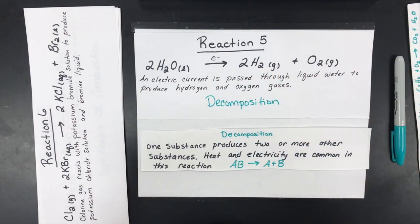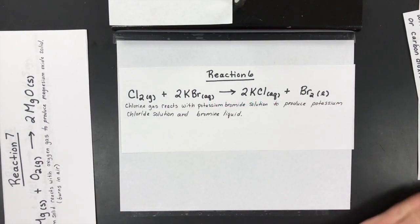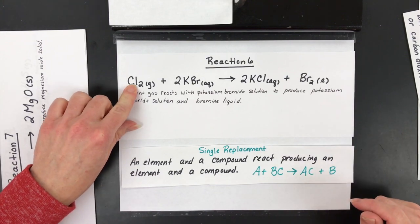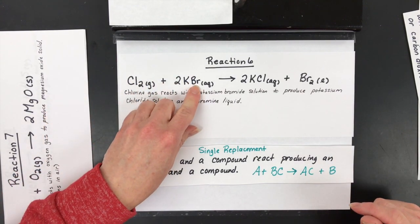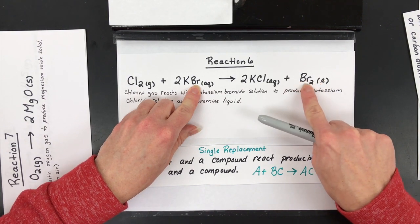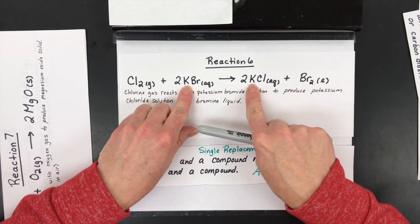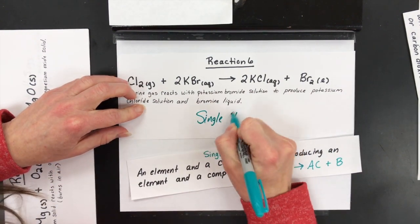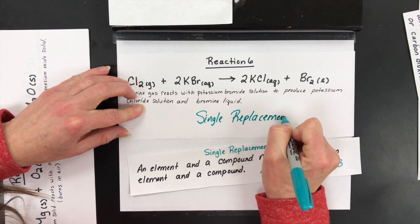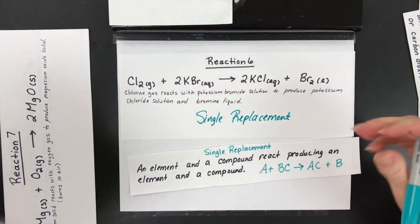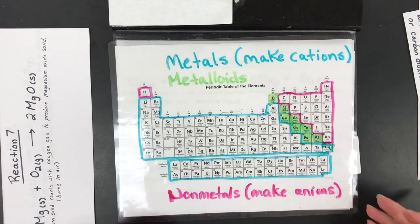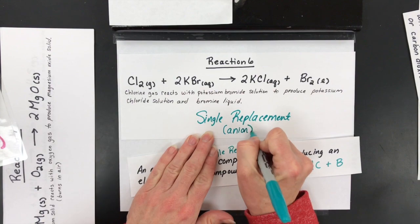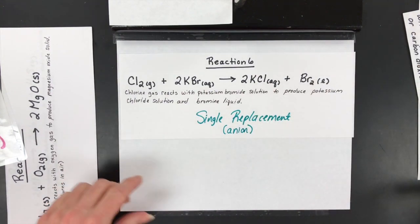All right, onto reaction six. Let's take a look. And the right answer is single replacement. You've got an element, chlorine. I know it's diatomic, but it's still an element. And you're going to replace bromine and turns into bromine liquid, which again is diatomic. And they're kind of fighting over that potassium ion. So that's single replacement. This one's a little different than the other single replacement that we had because this is a single replacement with anions. How do I know that? Those elements are over here in the non-metal area. So you may have to say that this is an anion replacement, two non-metals.